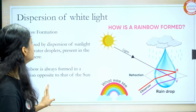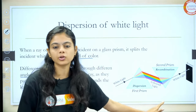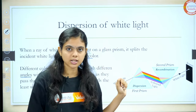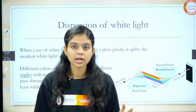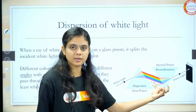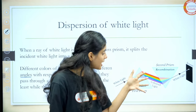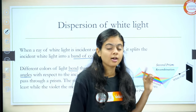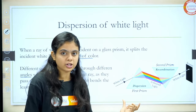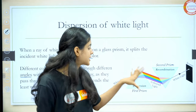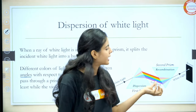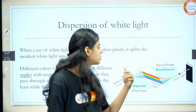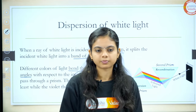Before moving forward, another important point: Newton's experiment of recombination of light. When an inverted prism is placed after the first prism, the seven split colors fall on the inverted prism and after passing through it, they recombine to form white light again. First, white light splits into seven colors through a prism; when those seven colors pass through an inverted prism, they recombine to form white light. This is called Newton's recombination of white light.